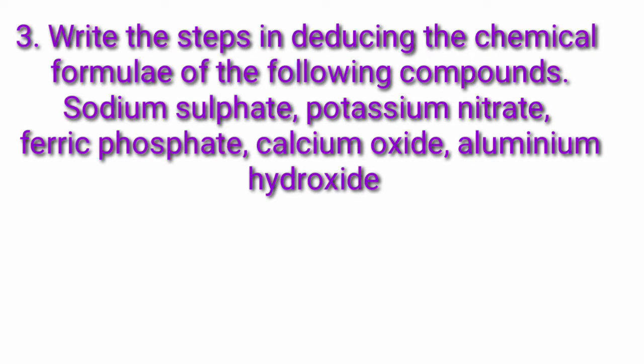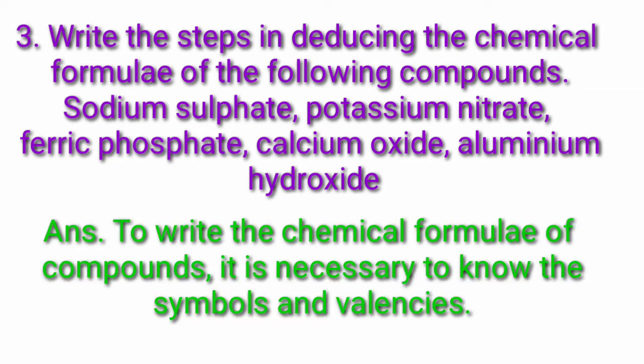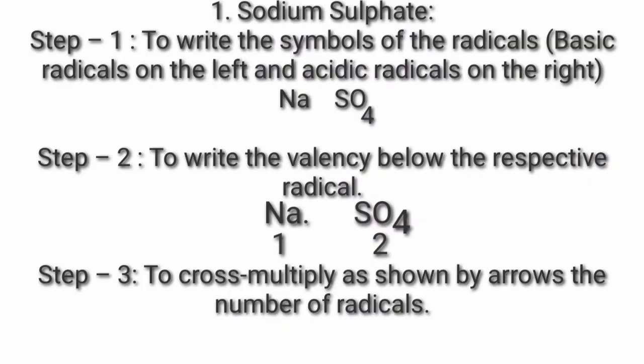Question 3: Write the steps for introducing the chemical formulae of the following compounds — sodium sulfate, potassium nitrate, ferric phosphate, calcium oxide, aluminium hydroxide. Answer: To write chemical formulae of compounds, it is necessary to know the symbols and valency of various radicals. First, sodium sulfate. Step 1: Write the symbols of radicals — basic radicals on the left and acidic radicals on the right: Na SO4. Step 2: Write the valency below the respective radicals — Na valency 1, SO4 valency 2.